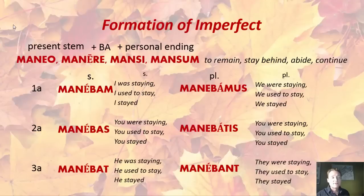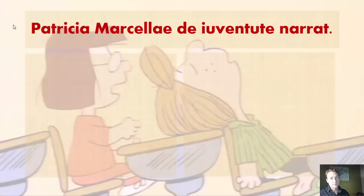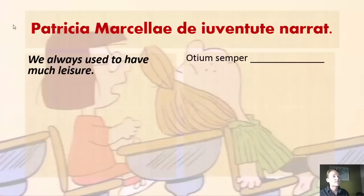Now let's take these out of the chart and use them in the context of real speech. Peppermint Patty talks to Marcy about their youth — that was when she was a year younger than she is right now. We always used to have much leisure — we always think things were better back in the day. So: otium semper — and we need our verb. Take a moment, think about what that would be, and write it down. Did you write otium semper habebamus? If you did, you were correct.